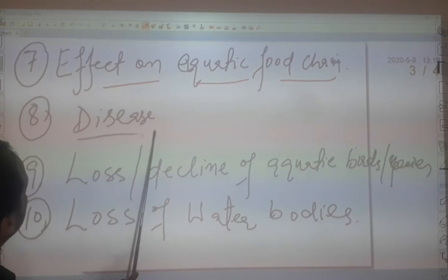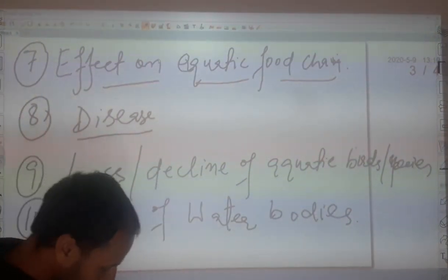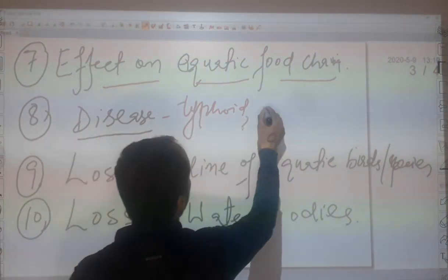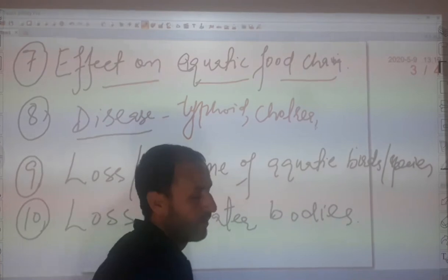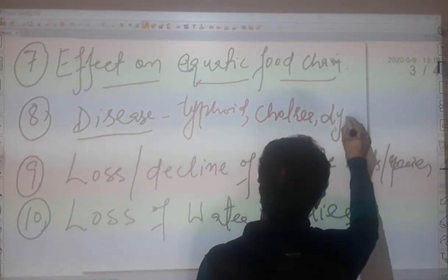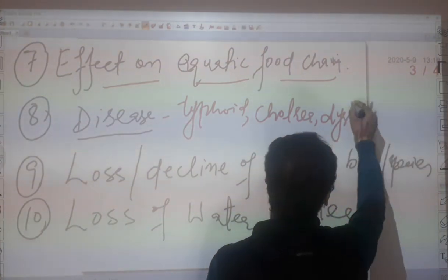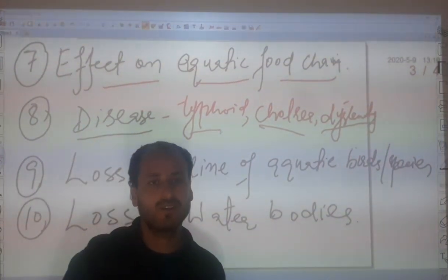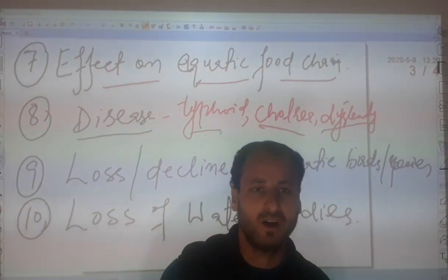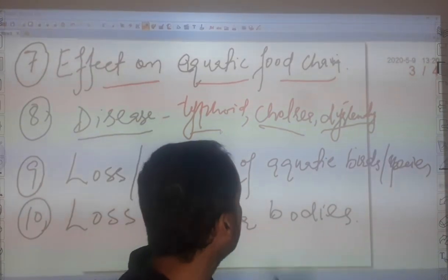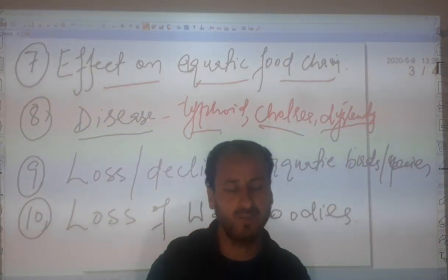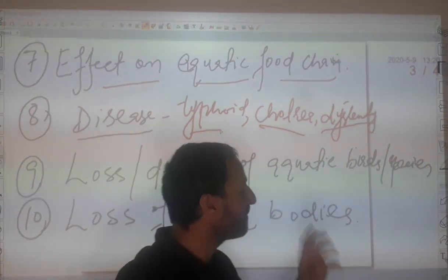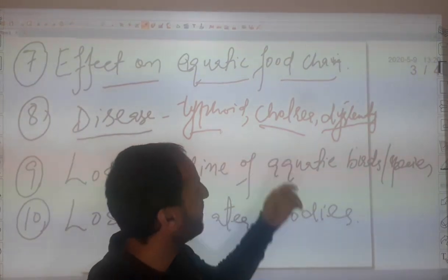Then we have diseases. Water pollution leads to many water-related diseases. For example, we have cholera and dysentery. These are caused due to the addition of pollutants and the growth of pathogens in the water — organisms like Salmonella, Vibrio cholerae, Shigella. The growth of these organisms is a result of polluted water, and if the same water is consumed by human beings, such diseases may result.